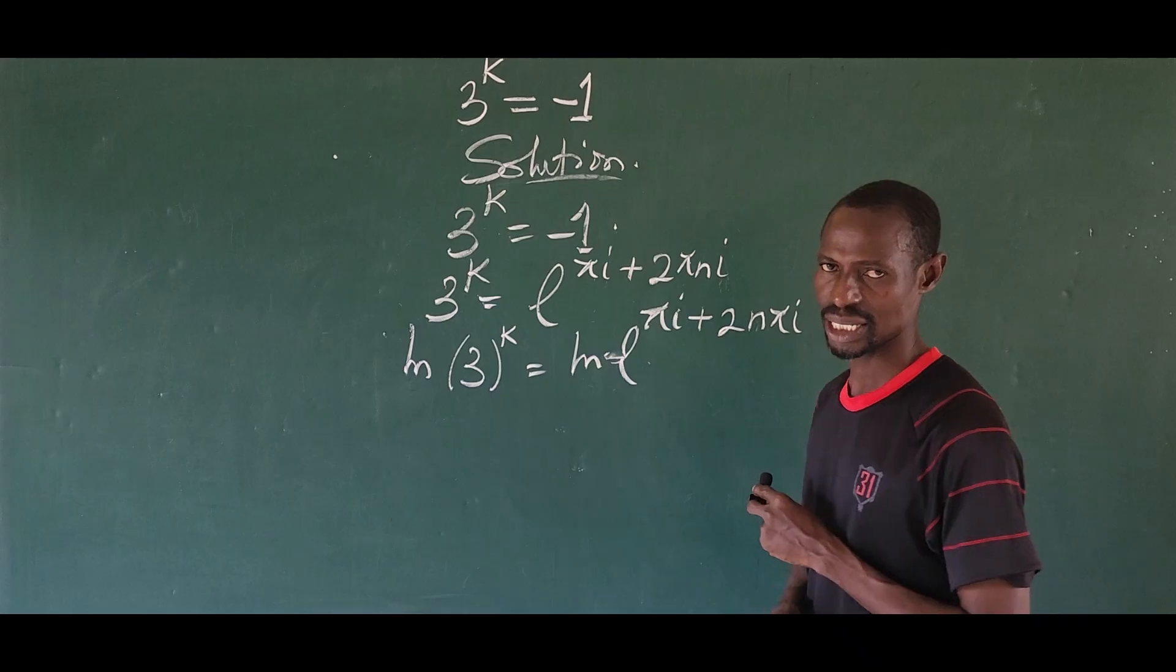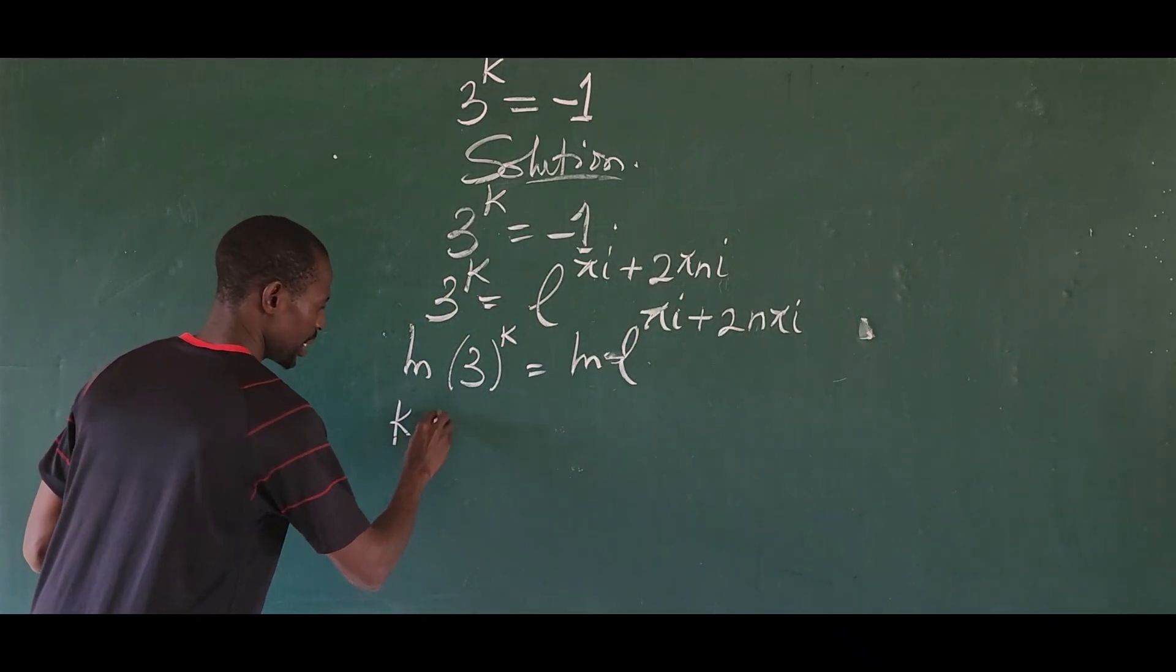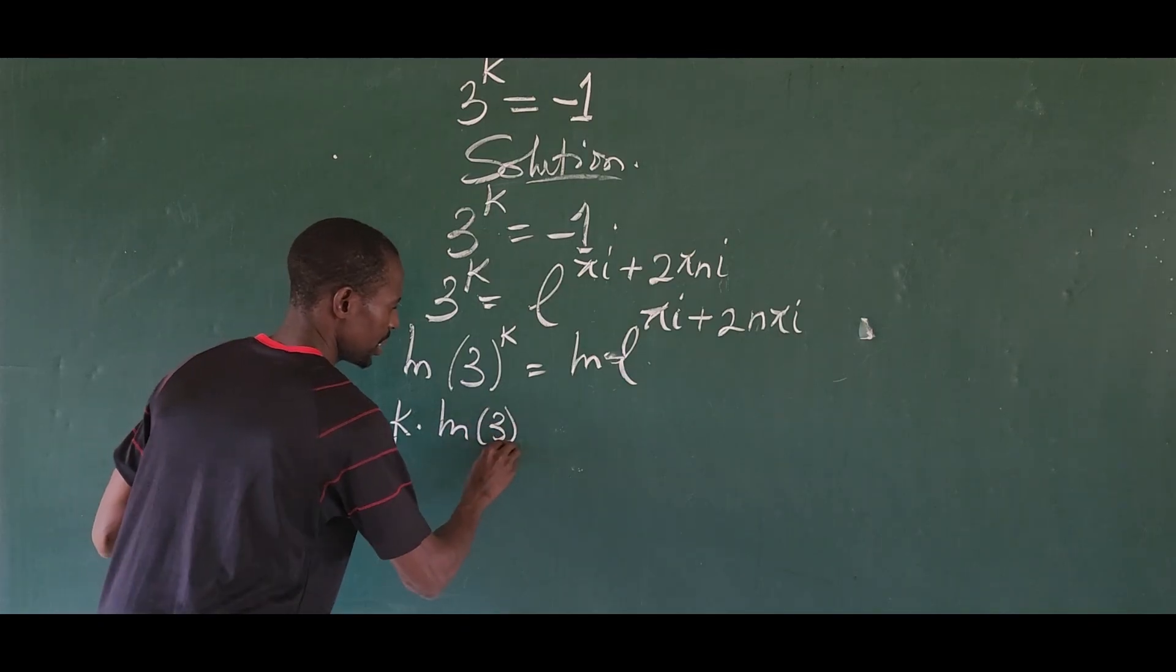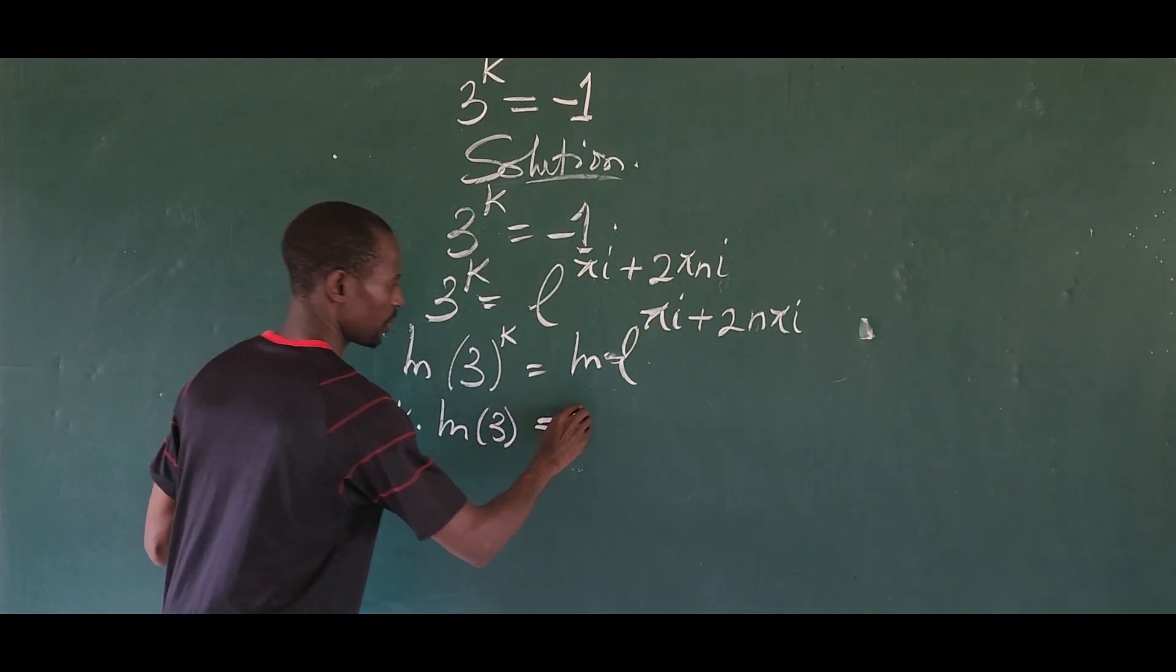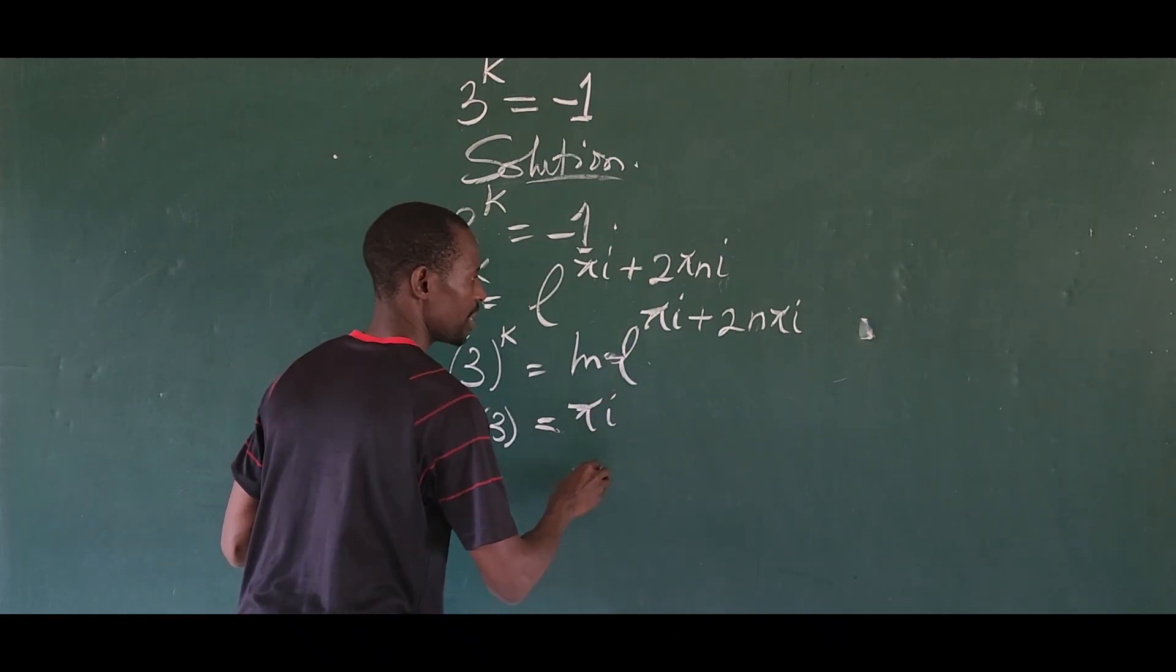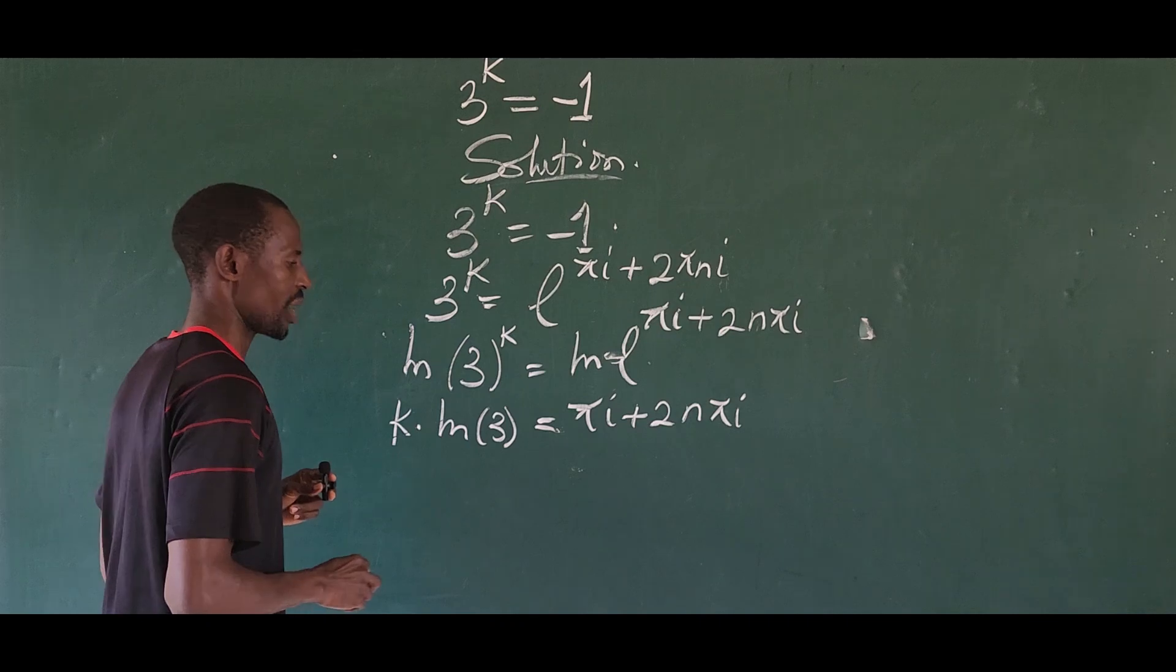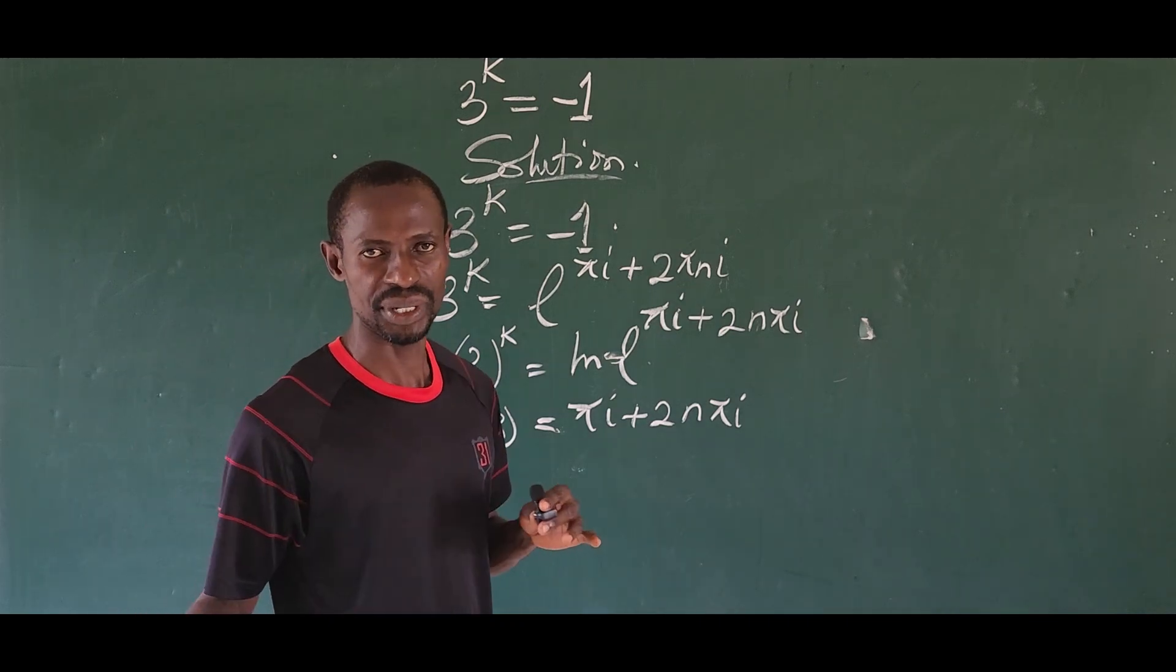And ln base e times e will give us 1. And so this is going to give us k times the ln of 3, equal to pi i plus 2n pi i. We are looking for k, so very easy.